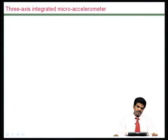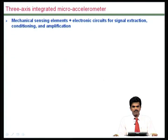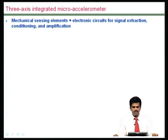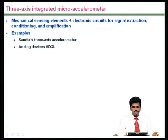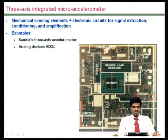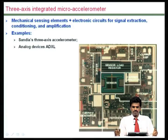One very popular example is micro accelerometers, as you may have seen elsewhere. These have mechanical sensing elements and associated electronics including signal conditioning circuits, amplification, and even control circuits built in. One example is the Analog Devices ADXL device, and as you can see from the schematic, there is a sensor and a large number of electronic components all integrated on board.